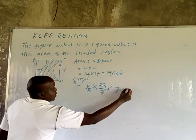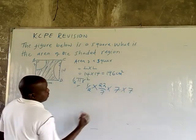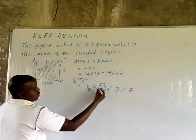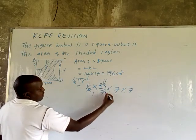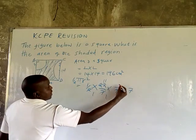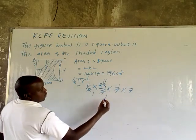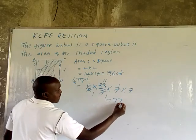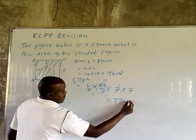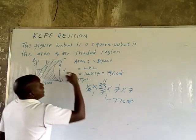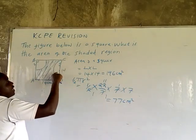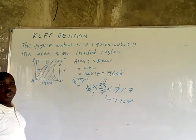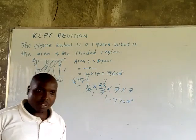Half times 22 over 7 times 7 times 7. The 2 cancels here to give 1, and here 11. The 7 cancels to give 1. So 11 times 7 equals 77 square centimeters. Therefore, the area of that region — the shaded area — is 77.